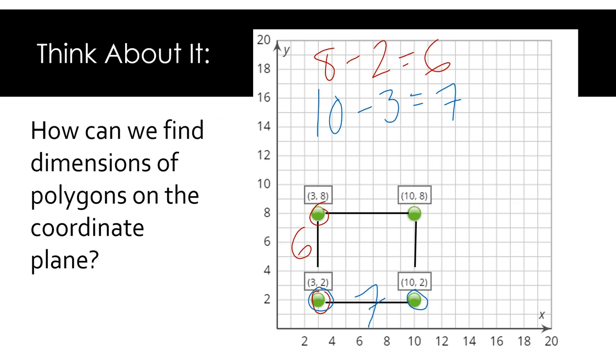Since this is a rectangle, I know that opposite sides are congruent. So we can go ahead and label those. Six. And seven. We have a lot of information about our polygon now. Do we have enough to help us find the area?